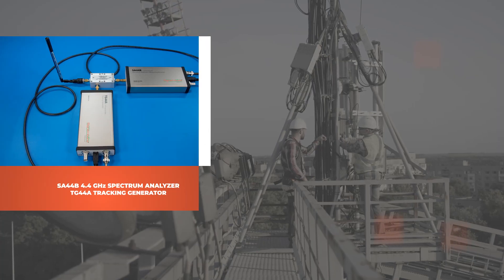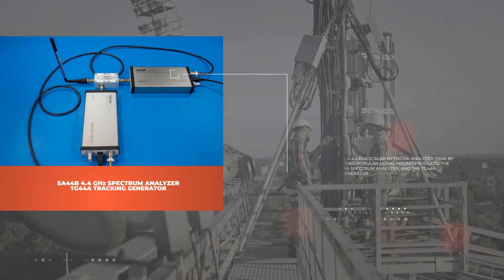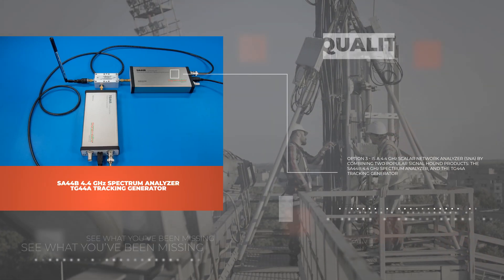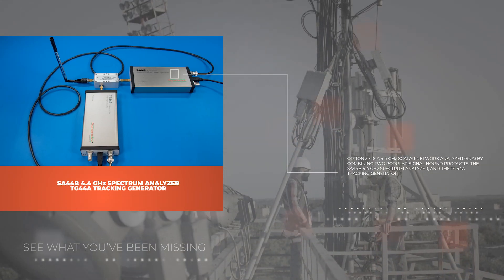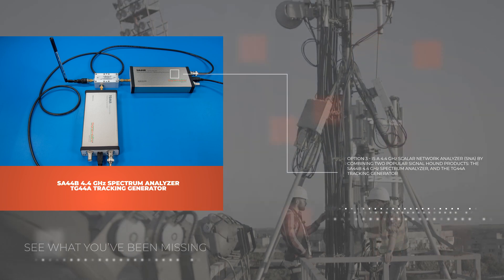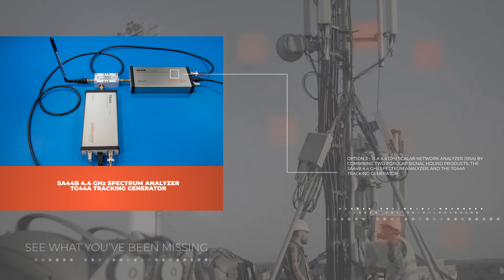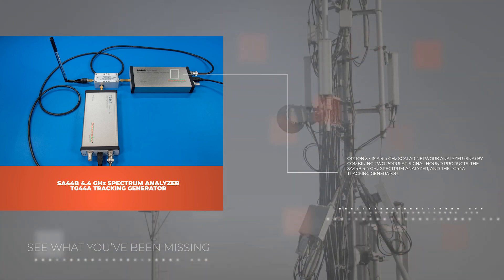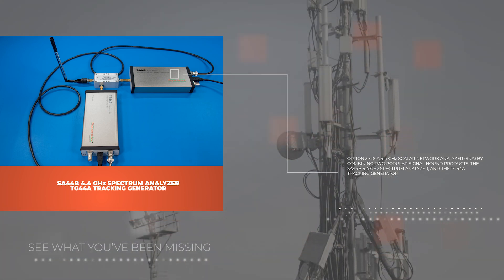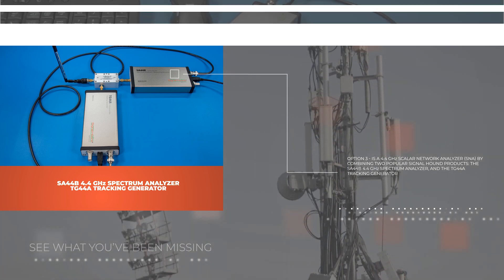Option three is a 4.4 gigahertz scalar network analyzer that combines the SA44B 4.4 gigahertz spectrum analyzer and the TG44A tracking generator.